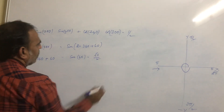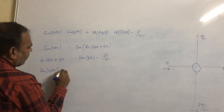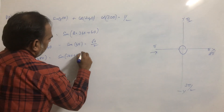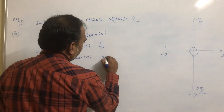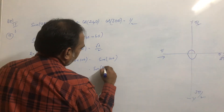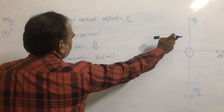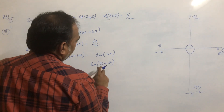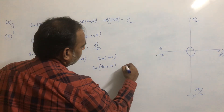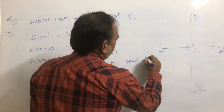Now take sin480. sin480 can be written as sin(360 + 120) = sin120. sin120 can be written as sin(90 + 30). Since 90 + 30 is in the second quadrant, sin(90 + θ) = cosθ, where θ = 30°. So this becomes cos30° = √3/2.